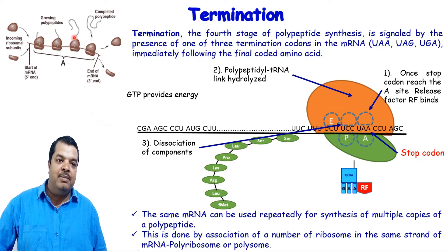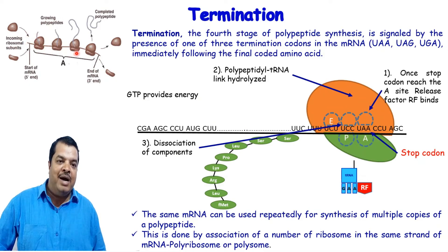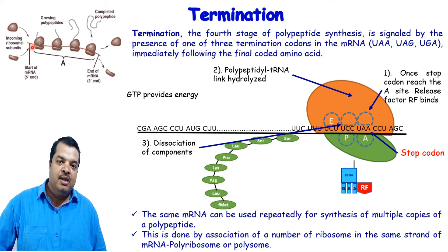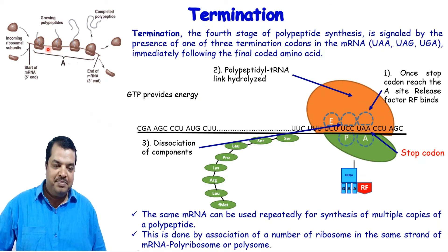Here, one polypeptide is almost complete and quite long, visible emerging from the ribosome. The 30S subunit is visible here, and a shorter polypeptide is attached there where initiation just occurred. When many ribosomes attach to one mRNA in sequence and move along it, this is called a polyribosome or polysome.